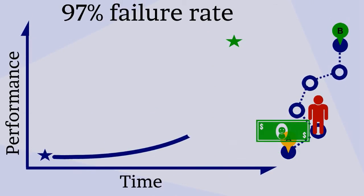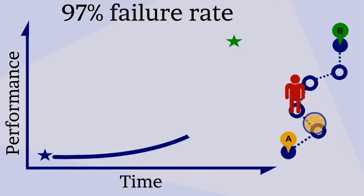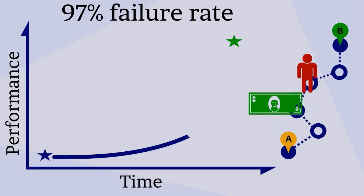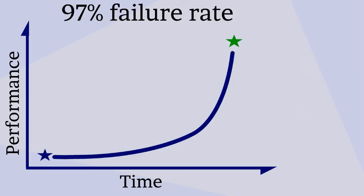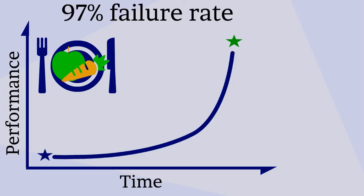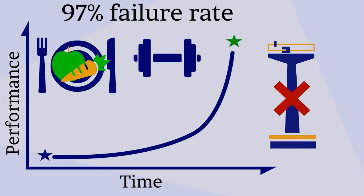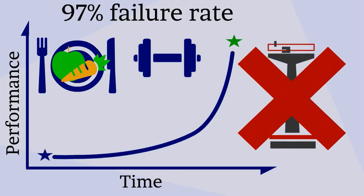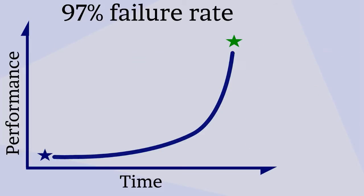A build it and they will come approach also requires that you invest leadership, time, and resources motivating individuals with the promise of future results. One analogy is a weight loss program that requires committing to a completely new lifestyle of diet and exercise but openly proclaims that you won't lose weight for two years. How many people would see that all the way through?